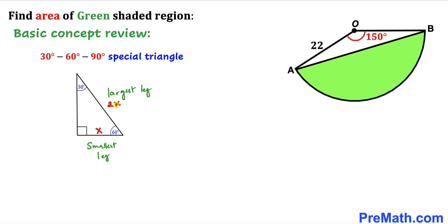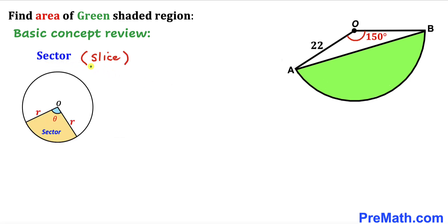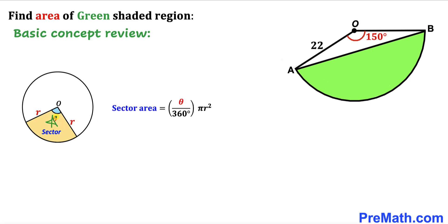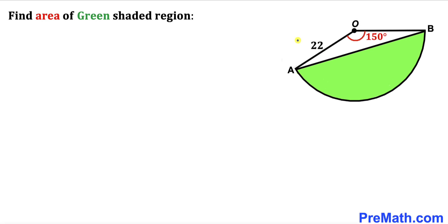Now let's go over the sector — a sector is the same as a slice of a circle. Given a circle with center O and radius r, this part is our sector where the angle is theta. The area of a sector is equal to theta divided by 360 degrees, times pi r squared, where r is the radius and theta is the central angle.